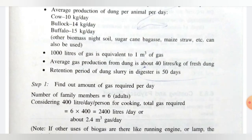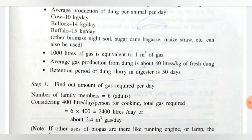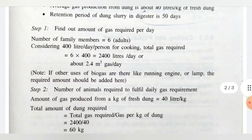Additional assumptions: 1000 liters of gas is equivalent to 1 cubic meter of gas. Average gas production from dung is about 40 liters per kg — meaning from 1 kg of animal dung, 40 liters of gas will be generated. The retention period for the dung slurry in the digester tank is 50 days; the slurry must be kept there for at least 50 days.